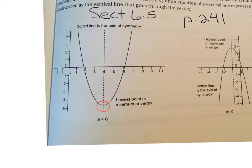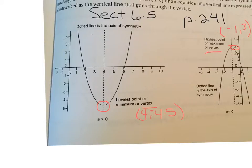This is the vertex here, and we identify the vertex by its coordinates. This one looks like negative 4.5, and this one looks like negative 1.3. The vertex is called a minimum if it's at the bottom when the parabola opens up. It's called a maximum when it's at the top because the parabola opens down.